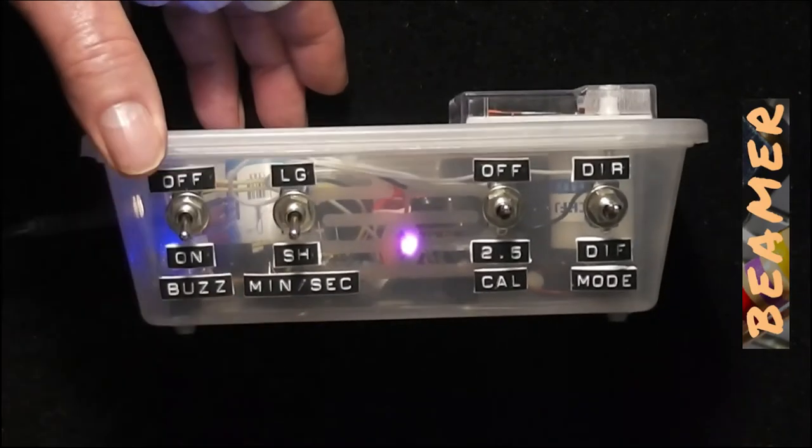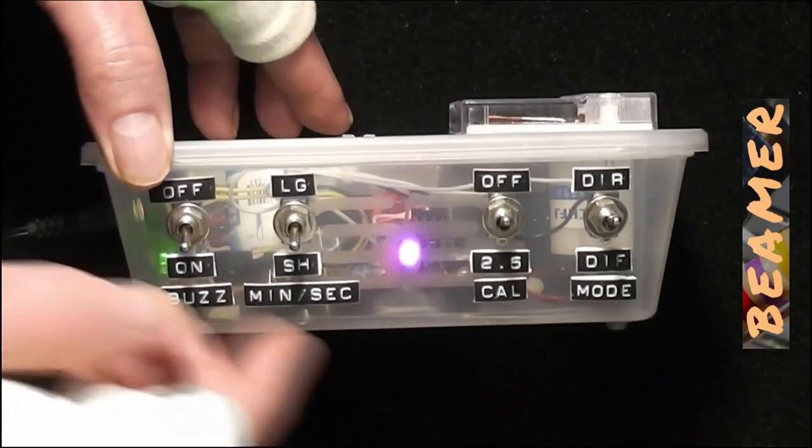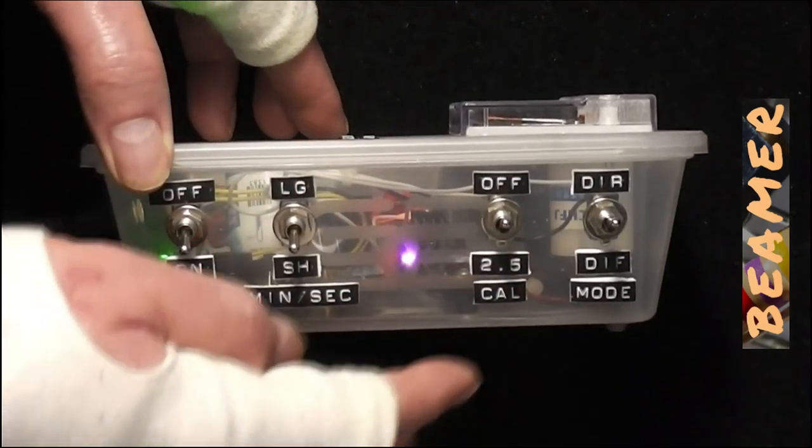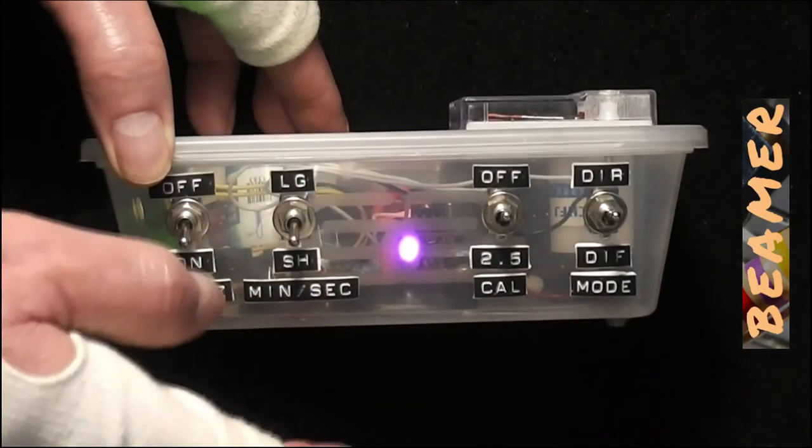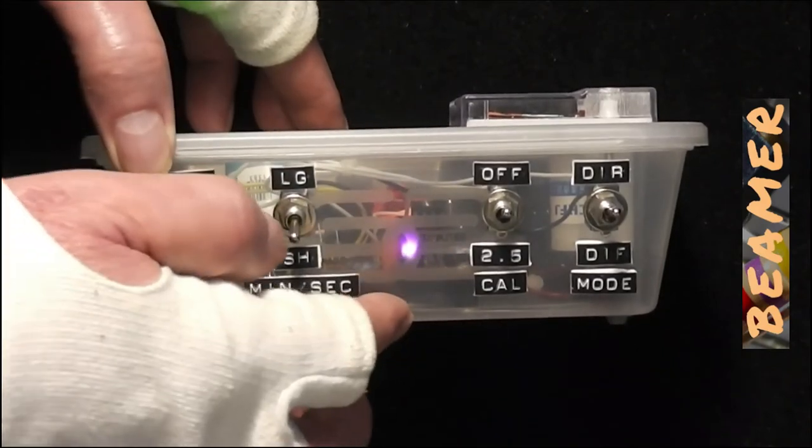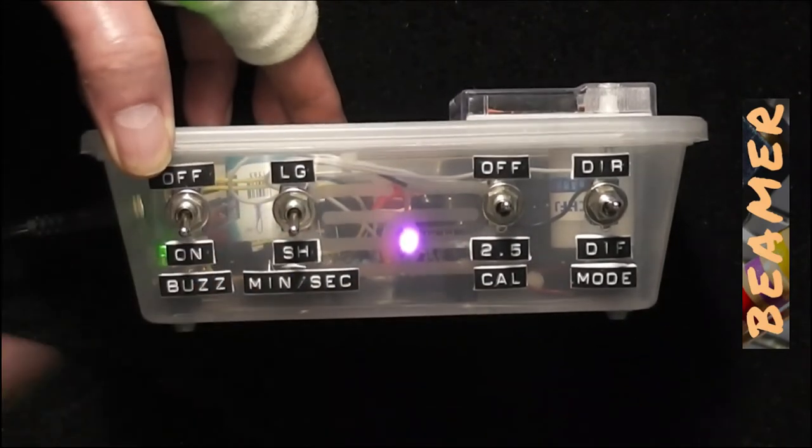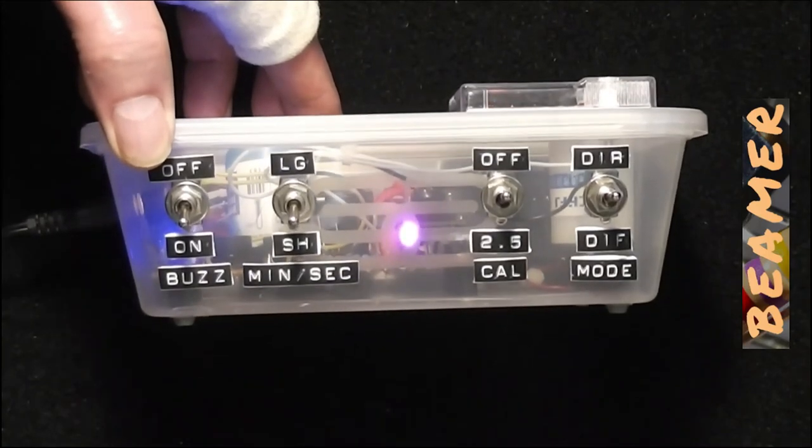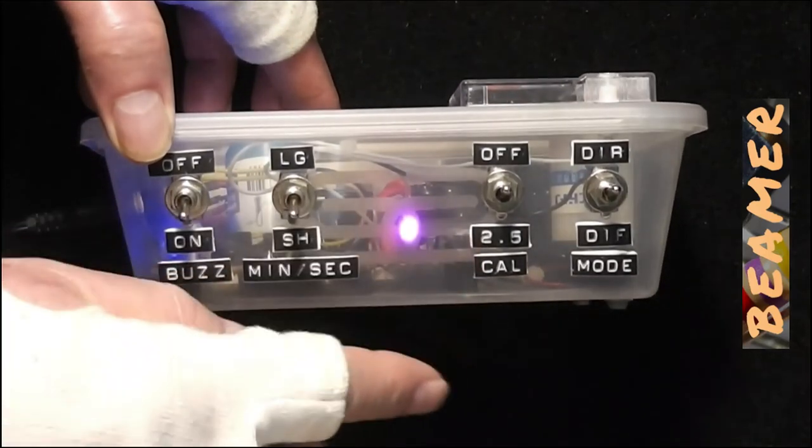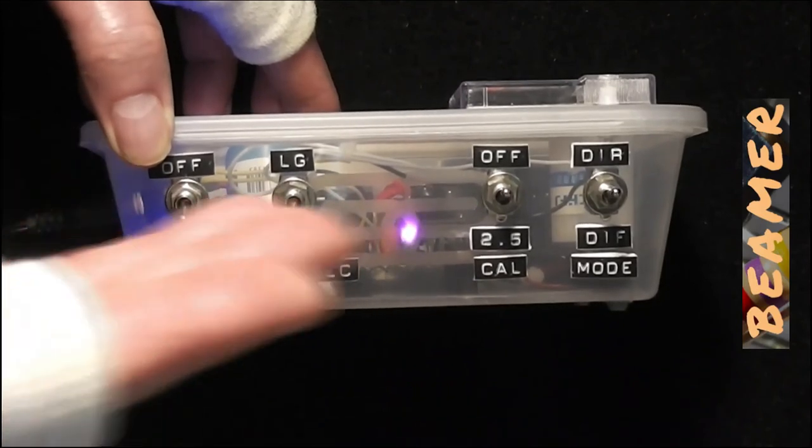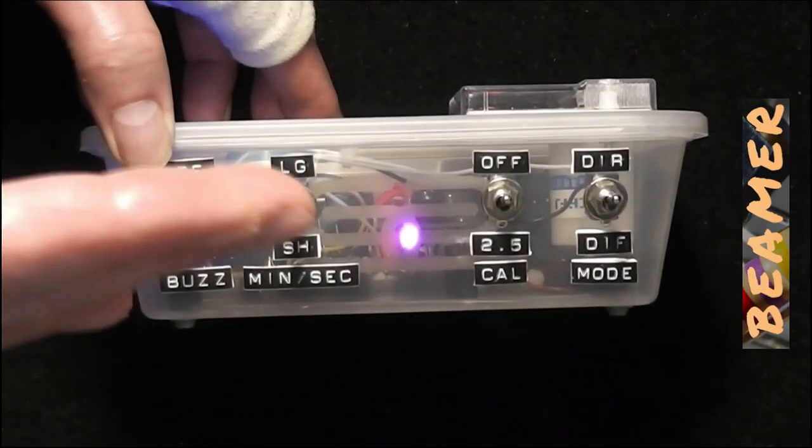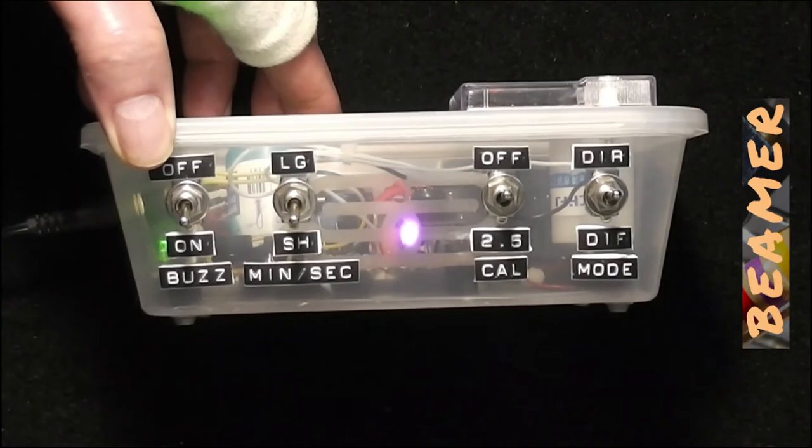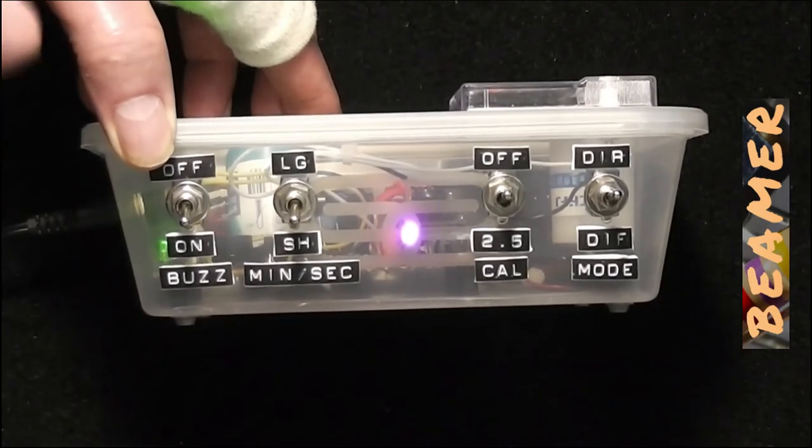The third switch here again is rather self-explanatory. It's the calibration for the meter. So it calibrates at two and a half milliamps, which is half FSD. Remember that the meter was five milliamps. It's calibrated at two and a half milliamps. And all that does is make sure that the meter reading is dead on accurate.